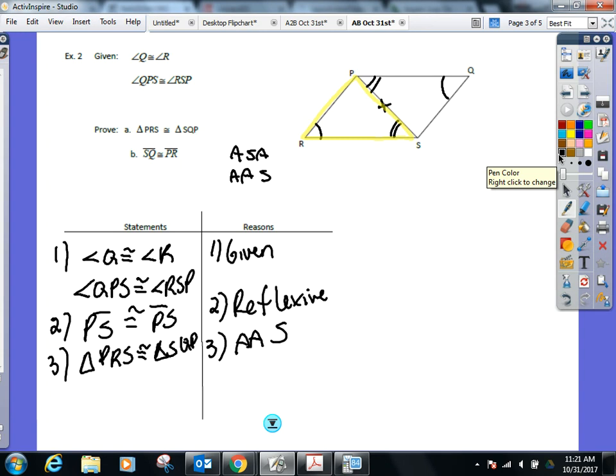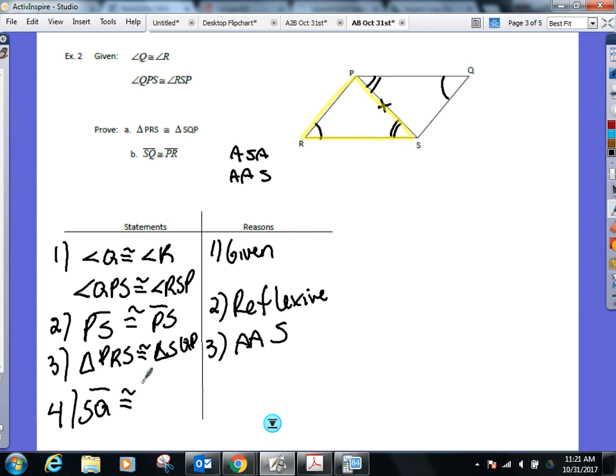Now, part B now, prove SQ and PR. Well, what are SQ and PR? Those are not just sides, but corresponding sides in congruent triangles. So what do I know about them? They're congruent. Notice, this is the second proof we've done. CPCTC is always after I prove the triangle's congruent. Not a method and not before, but after. Questions from you guys.